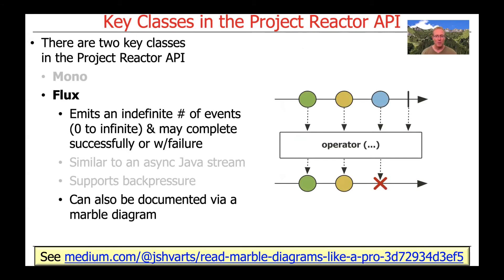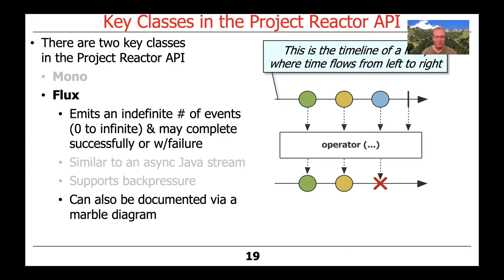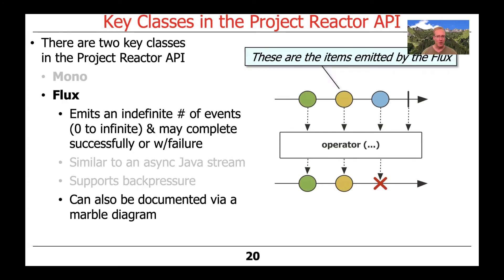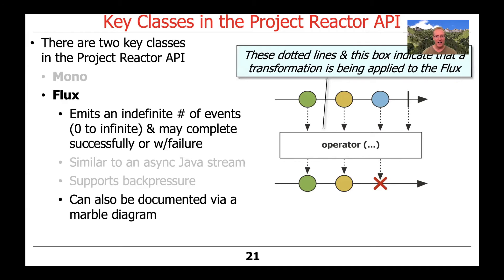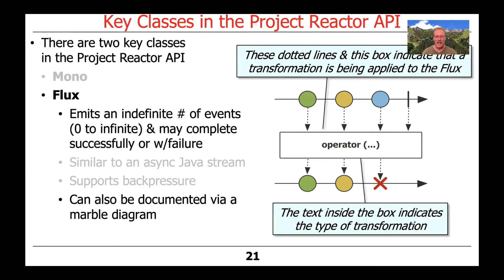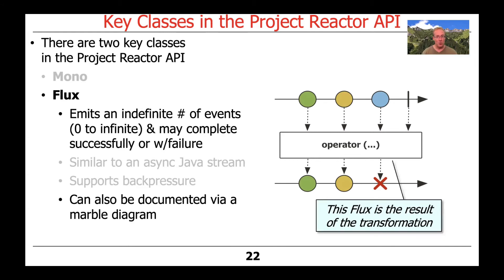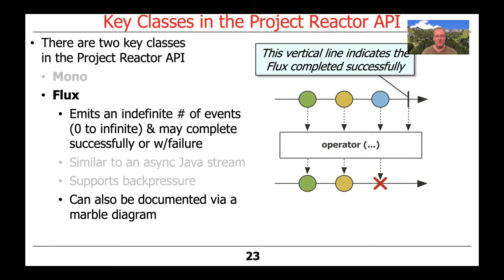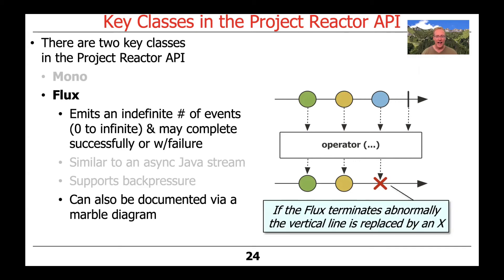You can also document Fluxes via Marble Diagrams. Once again, we have a timeline that flows from left to right. These are the items emitted by the Flux. The dotted line and box indicate that a transformation is going to be applied to the Flux. The name inside the box is the name of the method or operator that indicates the type of transformation or filter being applied. What comes out as a result is the new transformed Flux, with any modifications applied to its output. This vertical line indicates the Flux has completed successfully, and if the Flux terminates abnormally, the vertical line is replaced by an X to indicate something has gone wrong.